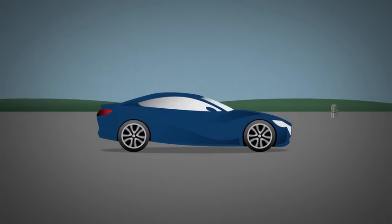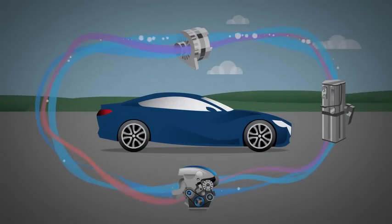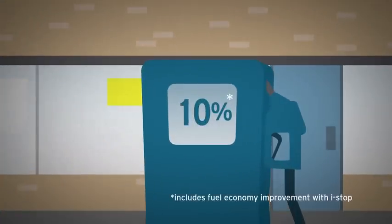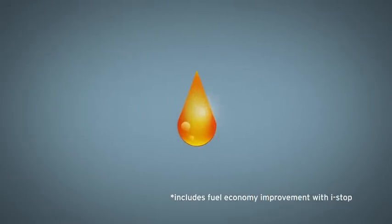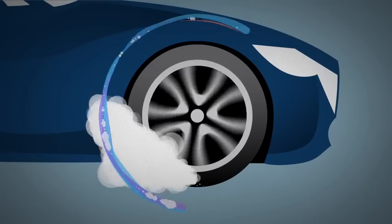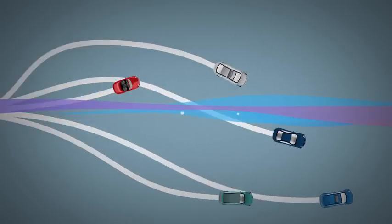With all its components in place, i-ELOOP closes the broken energy loop. Not only does it improve your fuel economy by as much as 10%, but it also enables 100% of the engine's horsepower to go directly to where it counts. In effect, wasted energy is turned into driving enjoyment.